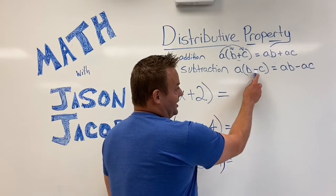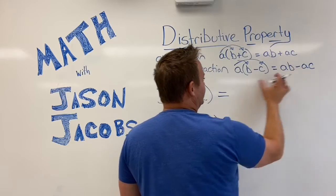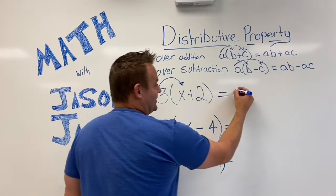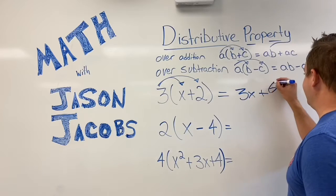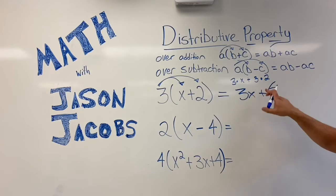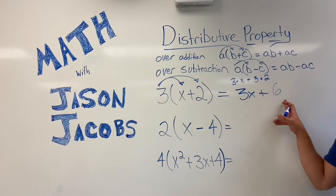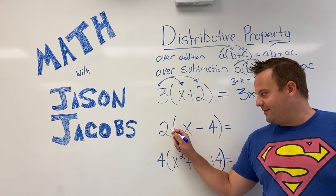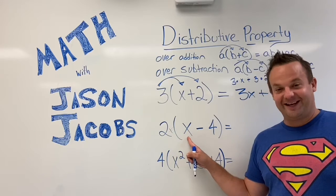The Distributive Property over Subtraction will have a subtraction sign, so you go A times B minus A times C. So let's look at an example. This is the Distributive Property over Addition: we go 3 times X, which is 3X, plus 3 times 2, which is 6. So they might make you write 3 times X plus 3 times 2, and that simplifies to 3X plus 6. The 3 distributes to the X, and the 3 distributes to the 2. Remember: when a number is right next to the parentheses, that means you're multiplying.